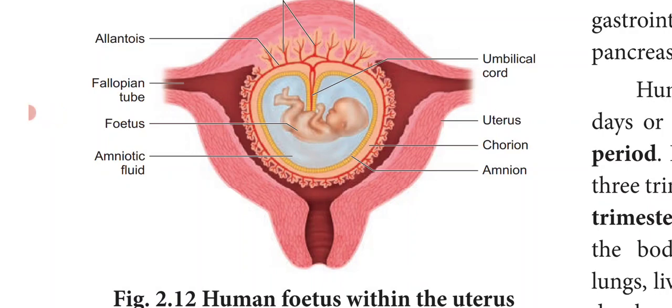The gestation period, or human pregnancy, is divided for convenience into 3 trimesters of 3 months each. So totally there are 9 months: the first 3 months is called the first trimester, the second 3 months is the second trimester, and the last 3 months is the third trimester.